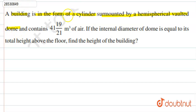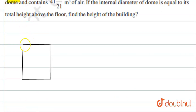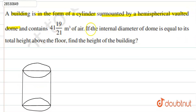That means we will make a diagram. Suppose this is the cylindrical building, and it was cylindrical with the hemispherical dome on top — this is the hemisphere.